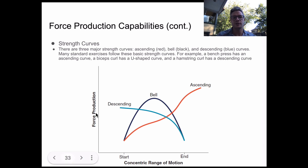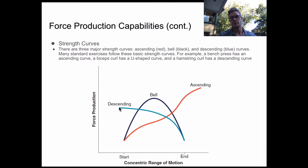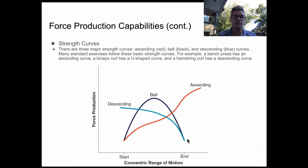For certain exercises, the amount of force produced will descend — a good illustration would be a hamstring curl. When the leg is fully extended, it starts producing the most force to get the weight moving, then biomechanically we have less and less force produced through the curl. The bell-shaped curve — a good example is a bicep curl: a little bit weaker to start, lots of force in the middle, and then less at the end.